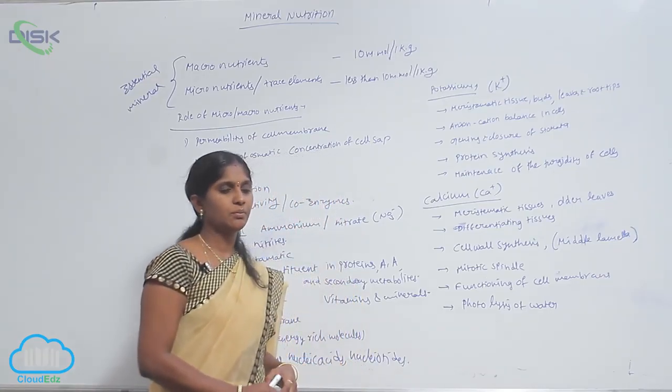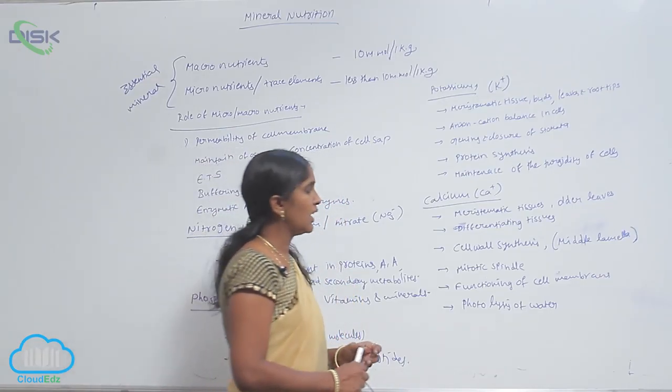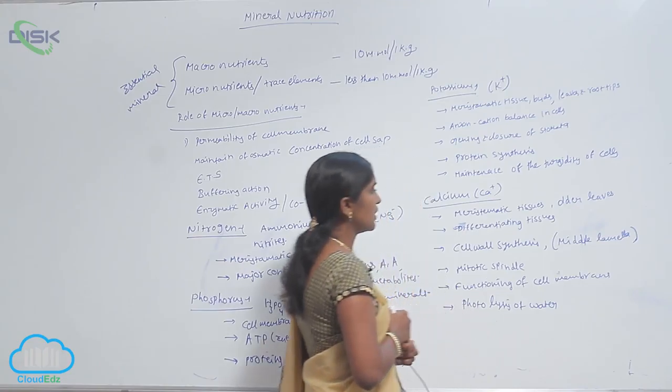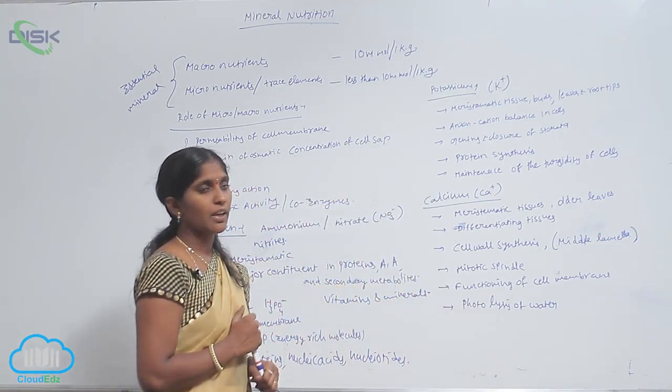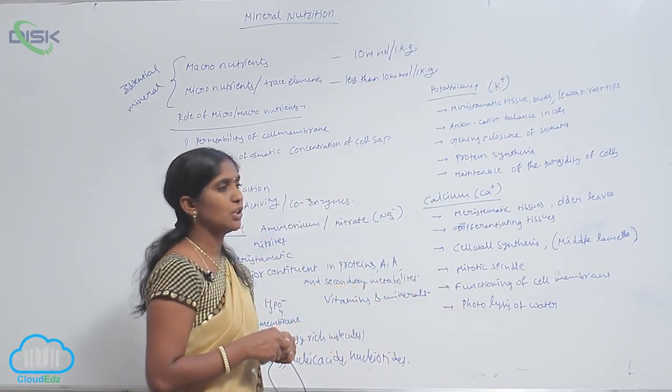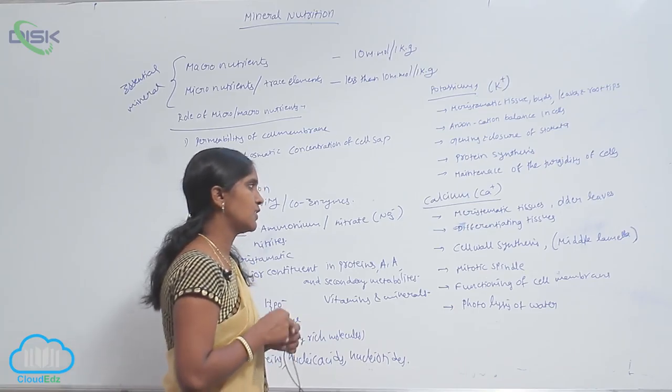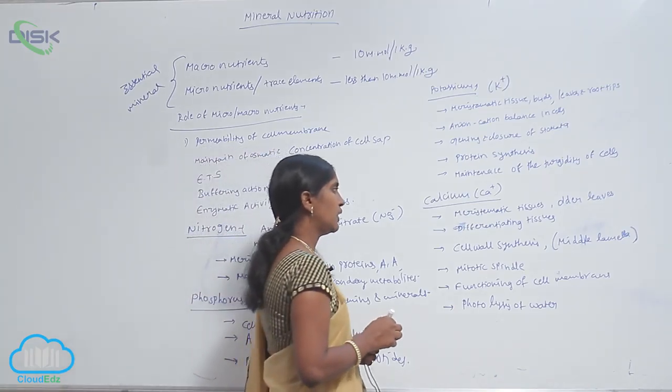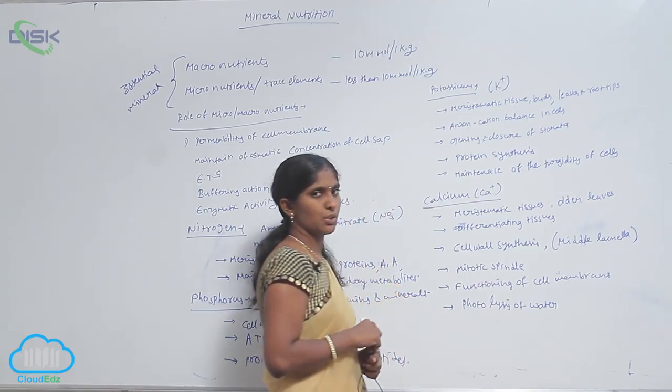Plants absorb calcium in the form of calcium ions (Ca+ ions). They are accumulated in meristematic tissue, older leaves, and differentiating tissues.